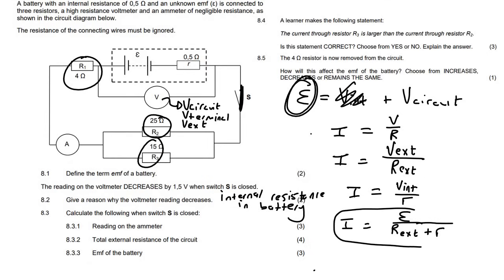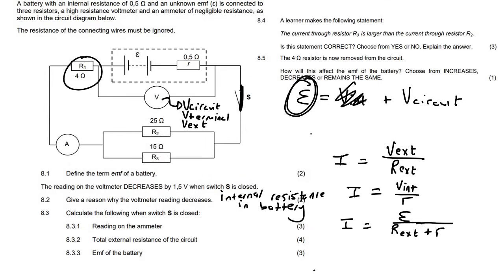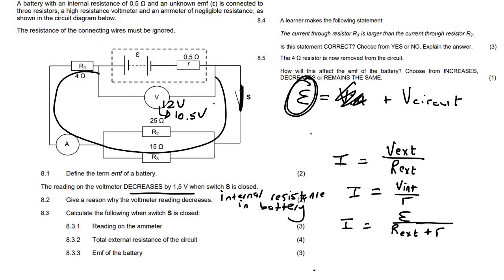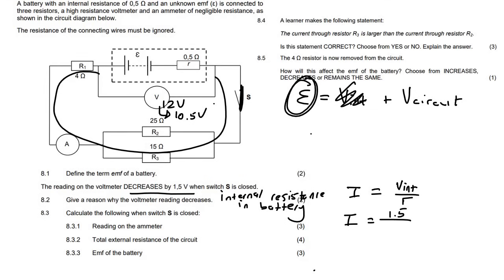We don't have the external voltage, but we do have the internal voltage. They told us the voltmeter decreases by 1.5 when the switch is closed — that 1.5 volts is the internal voltage. So to calculate the current: I equals internal volts over internal resistance, which is 1.5 divided by 0.5, giving us a current of 3 amps.